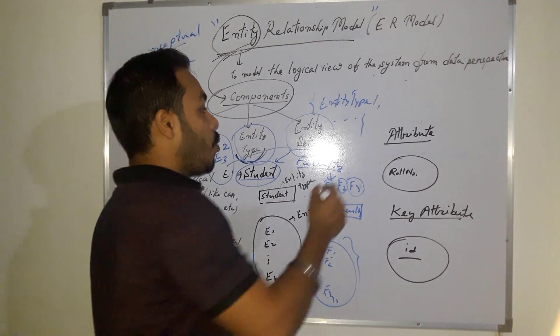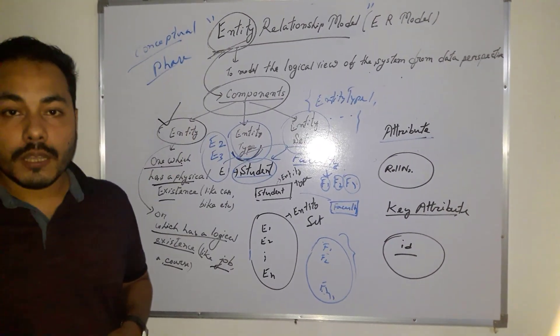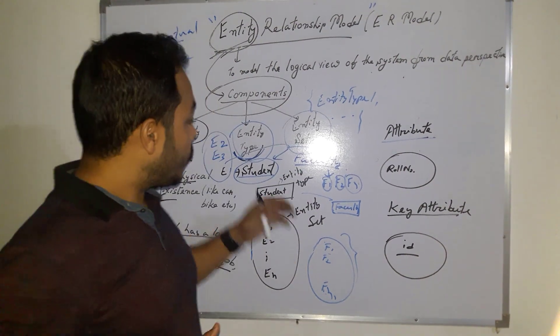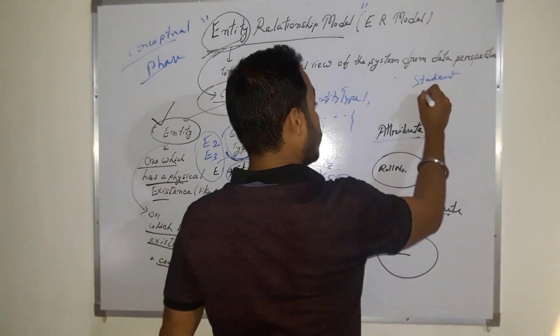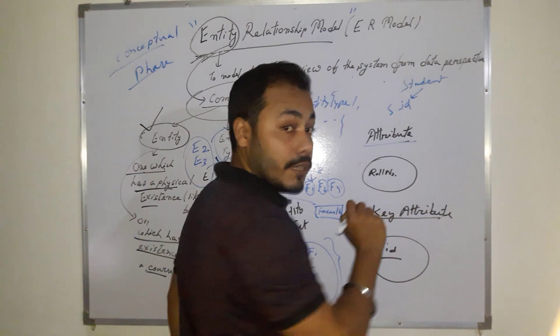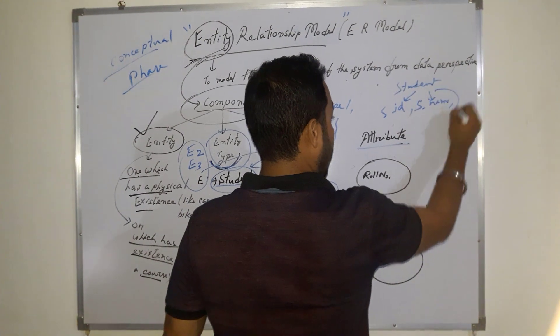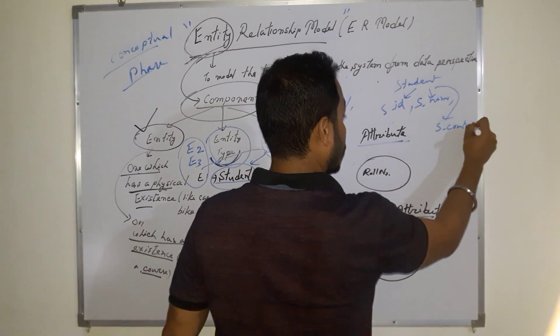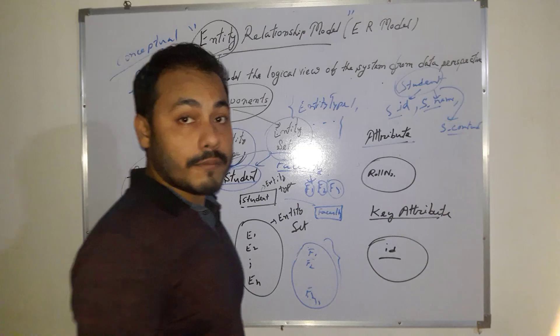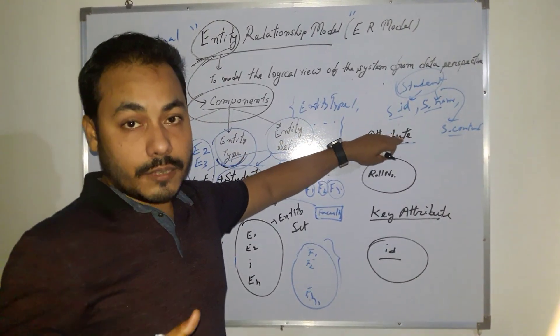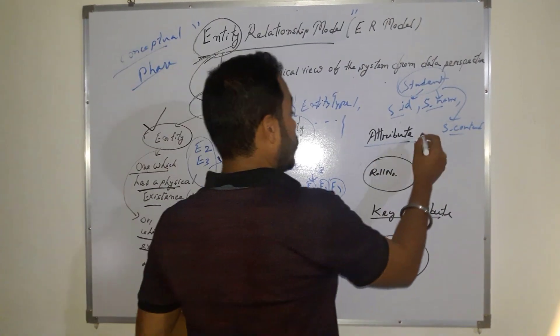After that, one important component of our ER model is attribute. What is attribute? Attributes indicate properties. Like suppose I am considering this student. In student, what you will find? For every student, you will have one student ID, isn't it? Then name, then say contact number. So they are denoting the properties for the student entity type. These properties are known as attributes, or I can say, if we are going to study this as a table, then with respect to tables, it is exactly denoting our columns.